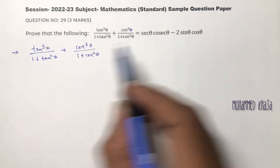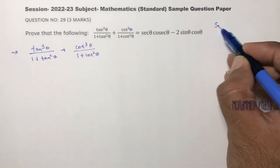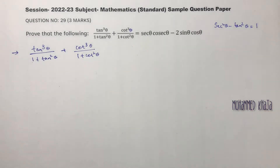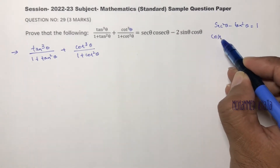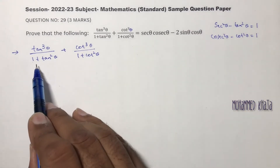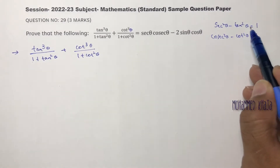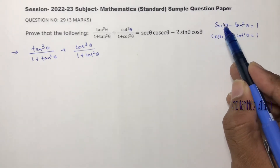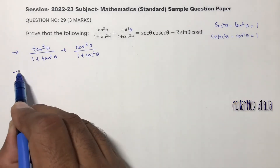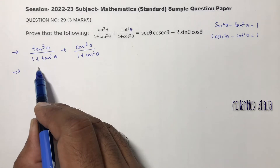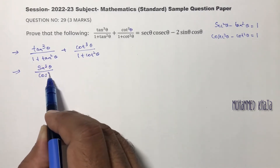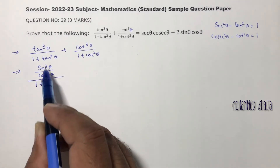Using the identities: sec square theta minus tan square theta equals 1, and cosec square theta minus cot square theta equals 1. So 1 plus tan square theta can be written as sec square theta, and 1 plus cot square theta can be written as cosec square theta. Now change all terms into sine and cosine. Tan cube theta is sine cube theta by cos cube theta.